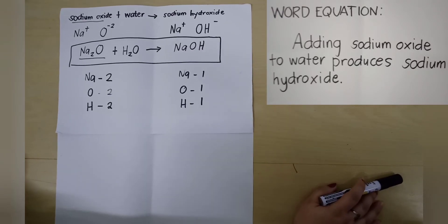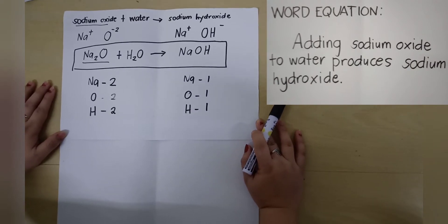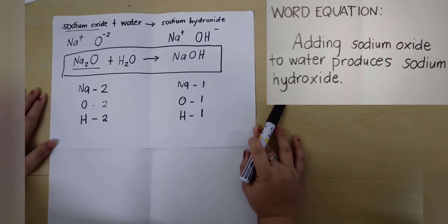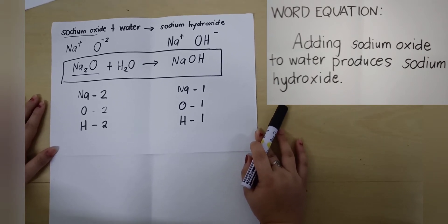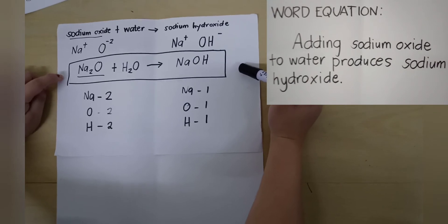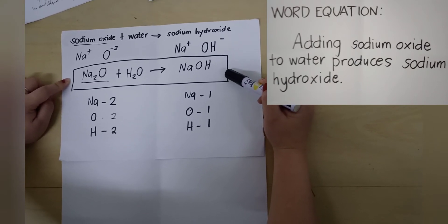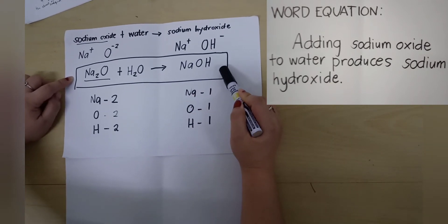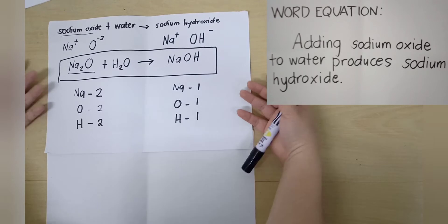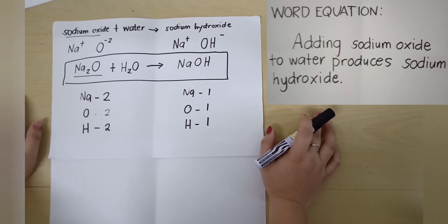The third step is to determine which elements have different number of atoms. By looking at it, all of the elements have an unequal number of atoms from the reactant and the product side. So our target is to make them the same. We have to put a coefficient before the compound that contains the elements with an unequal number of atoms. We're going to look at our unbalanced chemical equation and look at what compound contains these elements — it is sodium hydroxide that contains all of these elements. We have to put a coefficient before that compound that will make the equation balanced.